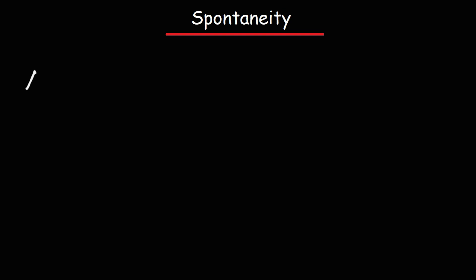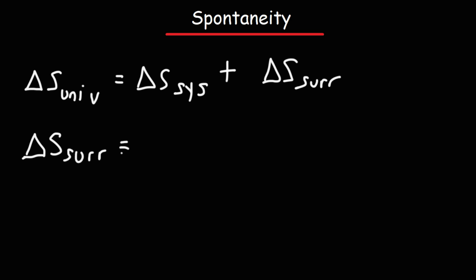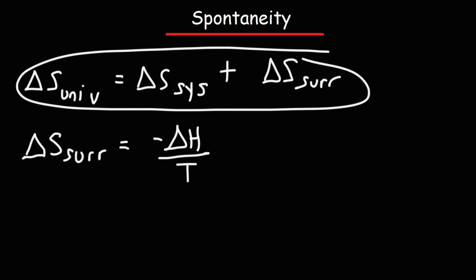Here's the first one. The entropy change, delta S of the universe, is the sum of the entropy change of the system plus the entropy change of the surroundings. You can calculate the entropy change of the surroundings by dividing the enthalpy, delta H, over the temperature. This equation is associated with the second law of thermodynamics.